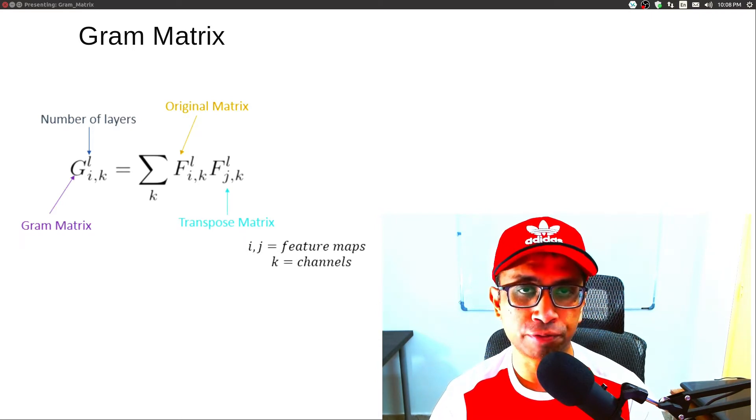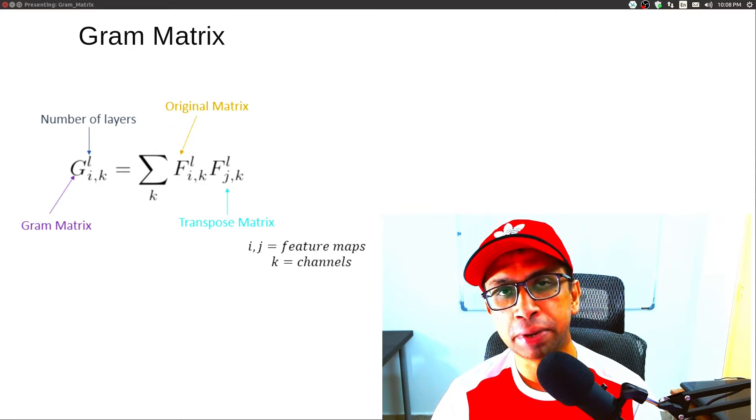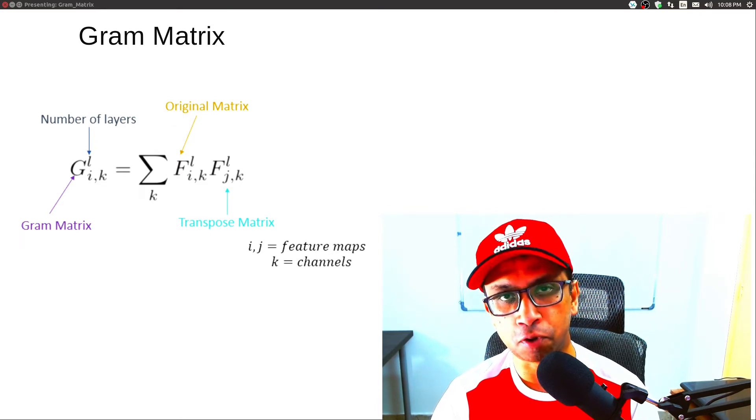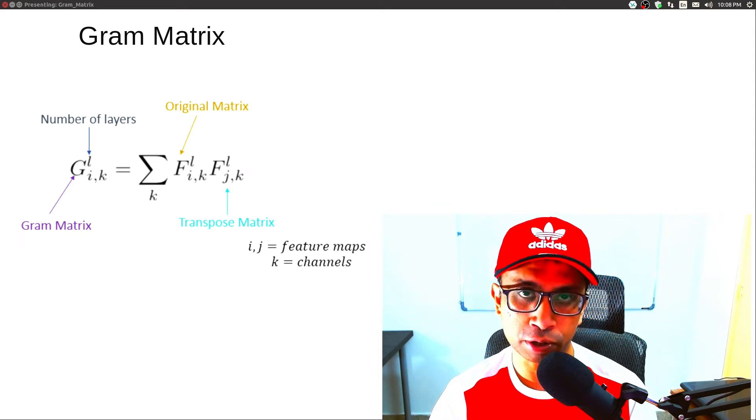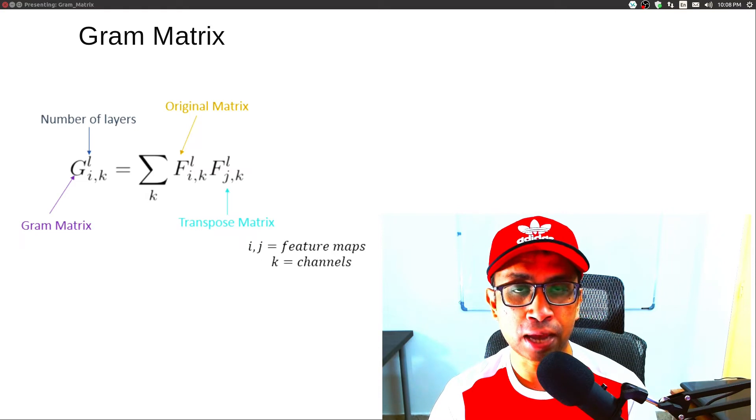Gram matrix is what made possible for neural style transfer algorithm to be able to compare the styles of images and ultimately transfer one style from one image to another image.